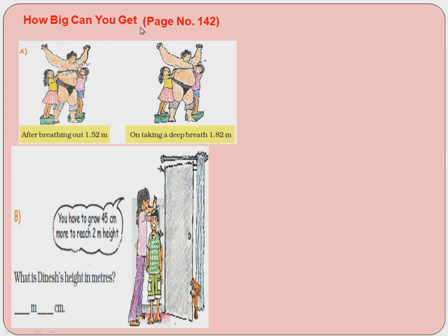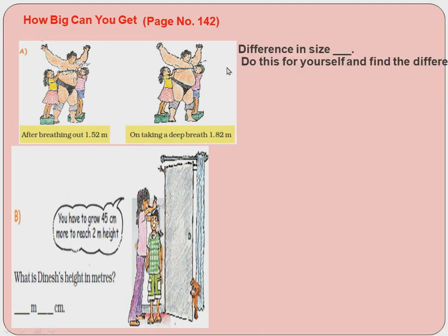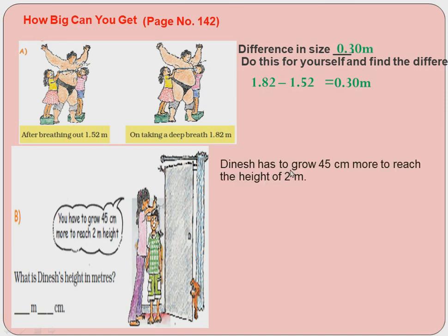After breathing out, chest size is 1.52 meters; on taking a deep breath it is 1.82 meters. Find the difference: 1.82 − 1.52 = 0.30 meters. Next question: Dinesh has to grow 45 centimeters more to reach a height of 2 meters. What is Dinesh's current height in meters and centimeters?